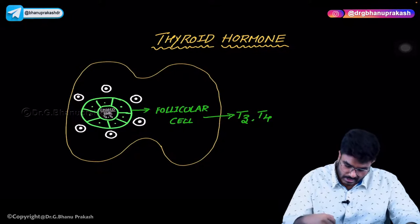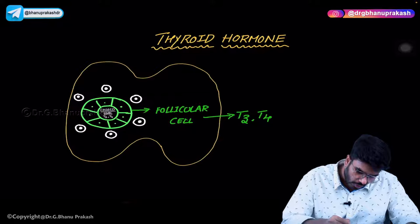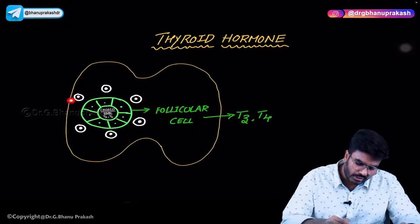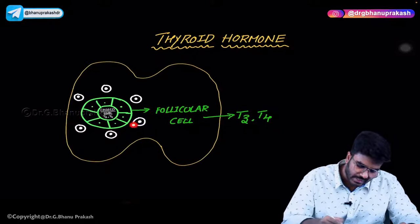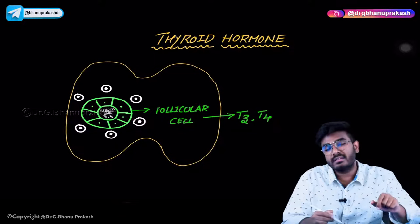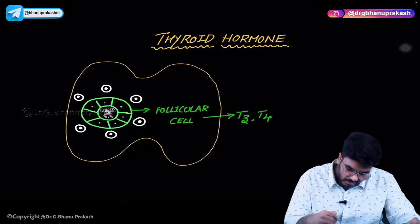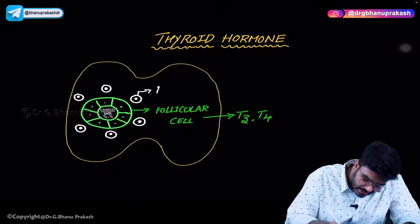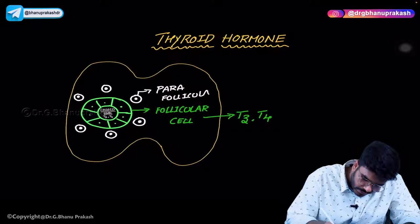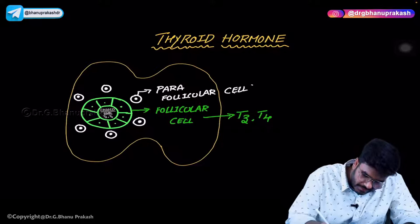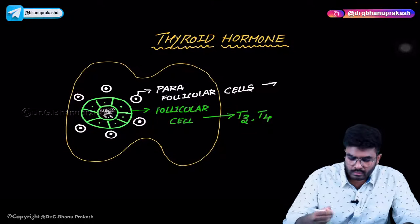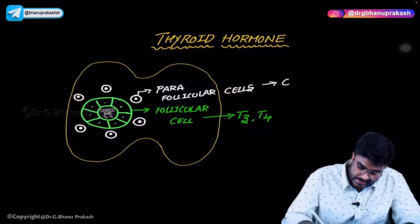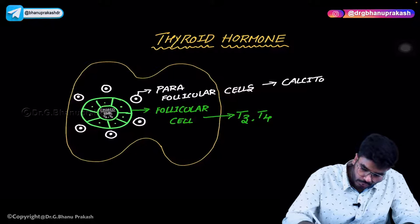T3 and T4 are produced by the follicular cells. Now, beside the follicular cells — 'para' means side — there are other cells shown in white color. These are called parafollicular cells. Parafollicular cells are also present in the thyroid gland. The function of parafollicular cells is to produce calcitonin.